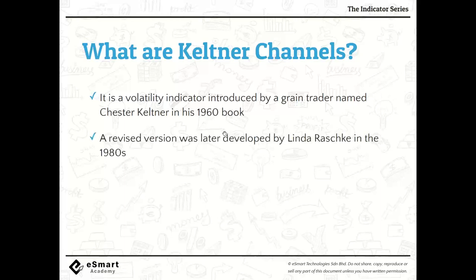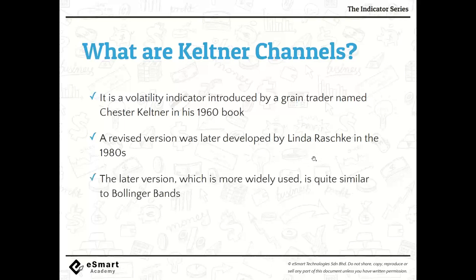Keltner Channels were introduced back in 1960, and then there was some revision and newer development by Linda Raschke in the 1980s. The KC we use today is further improved by Raschke. The concept is similar to Bollinger Bands because both indicators track volatility. This is important: you do not want to use KC and Bollinger Bands together, as they tell you the same thing. If you want a volatility indicator, use either KC or Bollinger Bands — don't overcomplicate your chart.